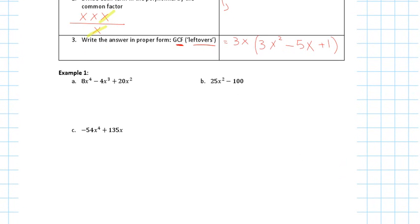The greatest common factor step is always your first step — no matter what kind of other factoring you have, always ask yourself: do I have a greatest common factor? If you do, factor it out. If not, skip that step and go to the next. Let's look at example one: 8x⁴ − 4x³ + 20x².